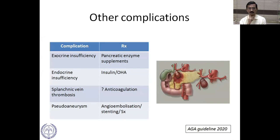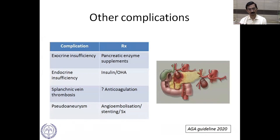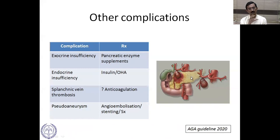Other complications include exocrine insufficiency from extensive parenchymal damage, requiring pancreatic enzyme supplements, and endocrine insufficiency requiring antidiabetic therapy. Splanchnic vein thrombosis is a tricky situation requiring a clinical decision on anticoagulation. Pseudoaneurysm can develop when a pseudocyst erodes into an adjoining vessel — most commonly the splenic artery — converting from a fluid collection to a blood-filled collection.